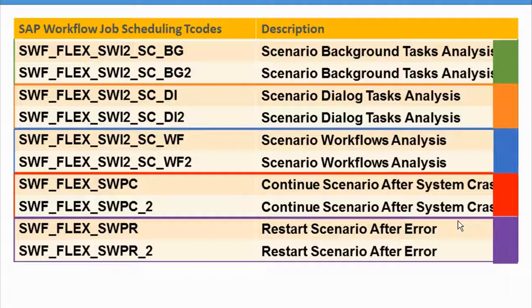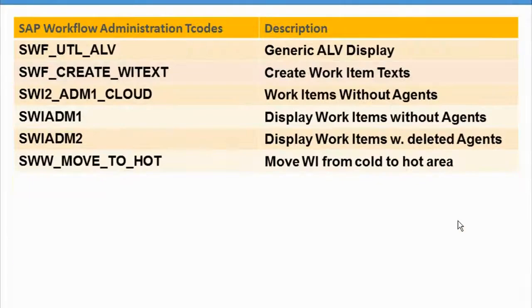Some of the job scheduling transactions handle task analysis, some are repetitive, and some are display only. When we cover it in detail in the system it will be more meaningful. In total, for this portion we have 10 transactions. The next portion is the SAP Workflow Administration transaction codes, which are pretty useful and related to generic utility functions.